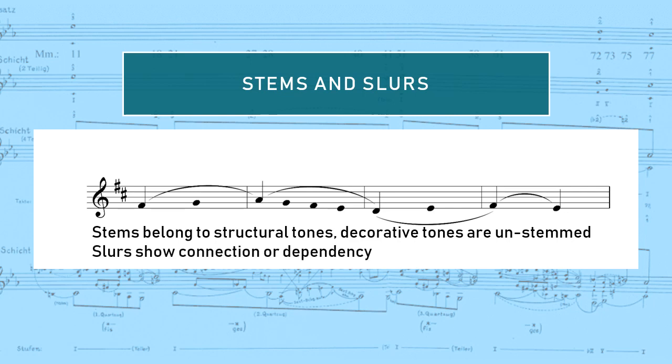Slurs are used to show either connection or dependency. The structural tones F sharp and A on the downbeats of measures one and two are connected by a slur. The G between them in measure one is contained underneath the slur, and this shows that it is conceptually dependent on that connection. In other words, the G is generated by the motion from F sharp to A. All of the tones in a well-formed analytic reduction should be related to one another and to the whole melody either through connection or dependency.